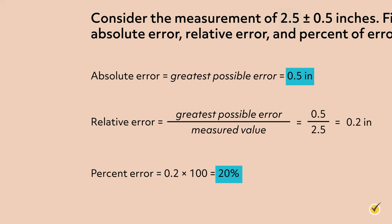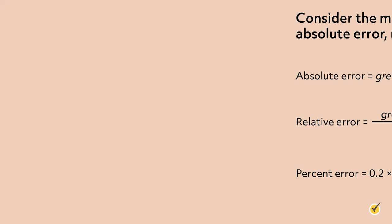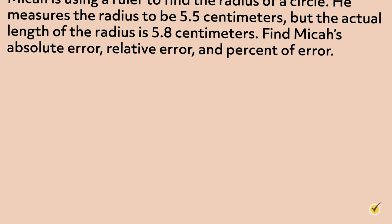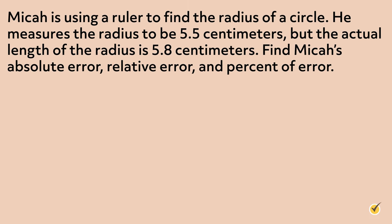Now it's your turn. I'm going to give you a set of measurements and you're going to find the absolute error, relative error, and percent of error. Micah is using a ruler to find the radius of a circle. He measures the radius to be 5.5 centimeters, but the actual length of the radius is 5.8 centimeters. Find Micah's absolute error, relative error, and percent of error. Pause the video and see if you can do this one by yourself.